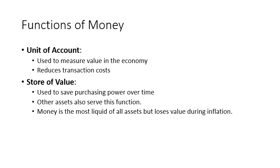The third function is store of value, which means money is used to save purchasing power over time. Other assets can serve this function, but money is the most liquid. For example, assume you are working every month and producing something valuable. You transfer your production to money and save the value in it — you can use it at any time. However, the problem is that during inflation, money loses its value, while other assets keep their value. So people prefer not to keep all their wealth in money only, but divide it across different assets.